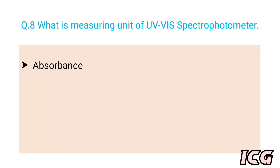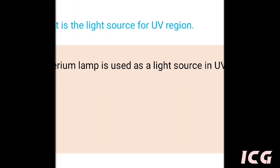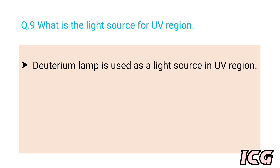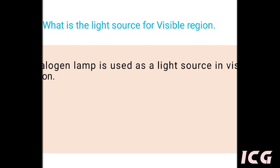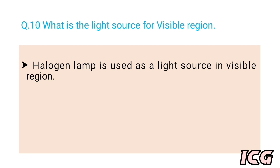The next question is: what is the measuring unit of UV-Visible spectrophotometer? The answer is absorbance. The next question is: what is the light source for the UV region? The answer is a deuterium lamp is used. The next question is: what is the light source for the visible region? The answer is a halogen lamp is used.